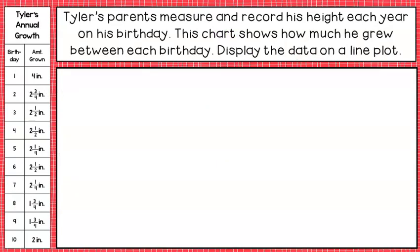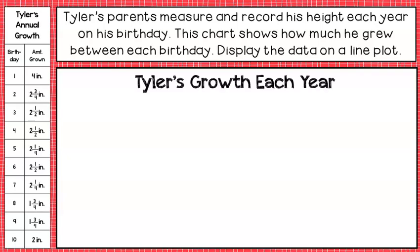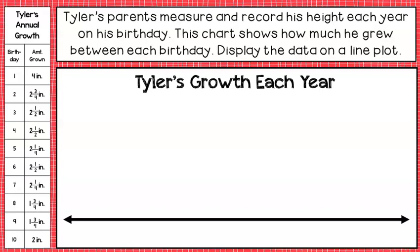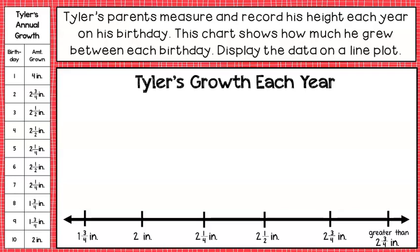Next problem: Tyler's parents measure and record his height each year on his birthday. The chart shows how much he grew between each birthday. Display the data on a line plot graph. This one doesn't start at zero and the numbers include half-inches and three-fourths of an inch — those get graphed in between whole numbers.